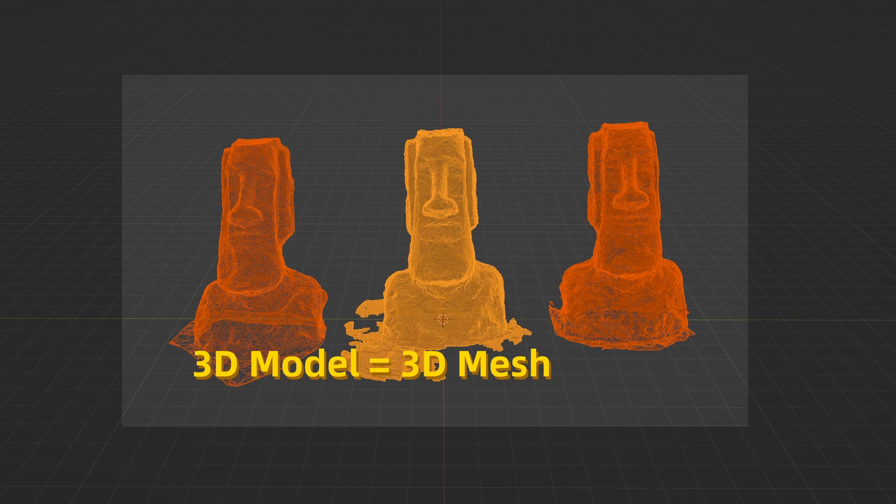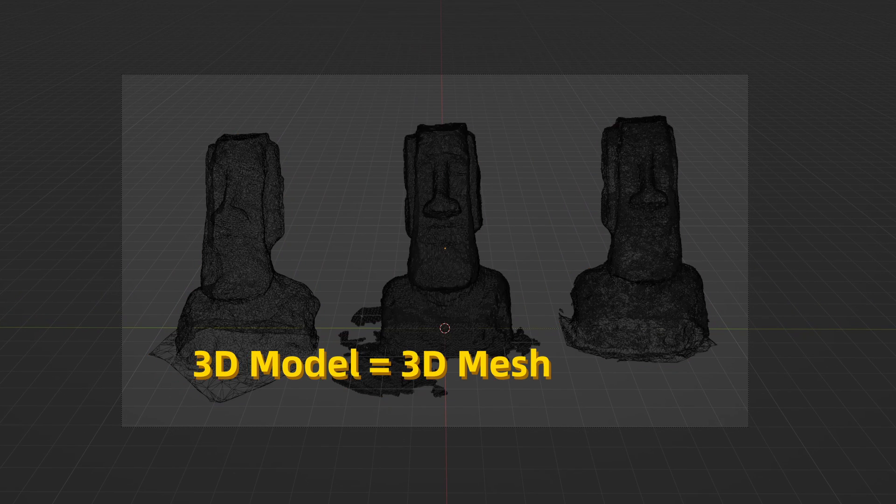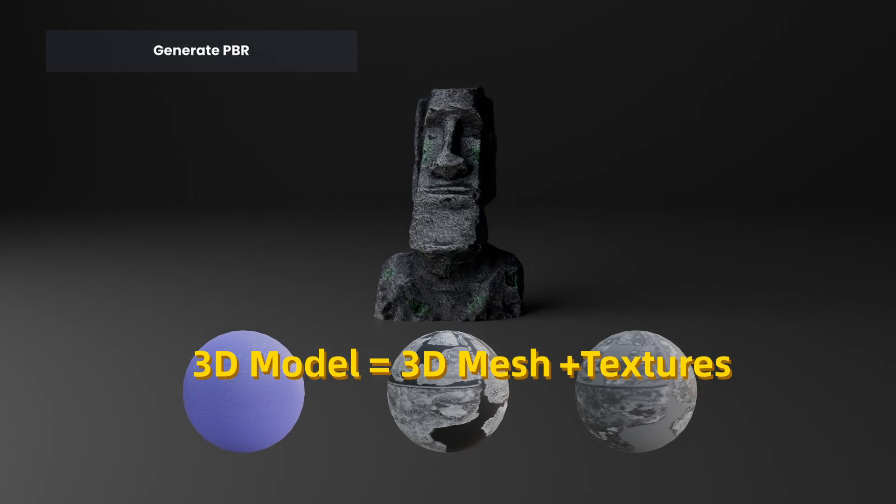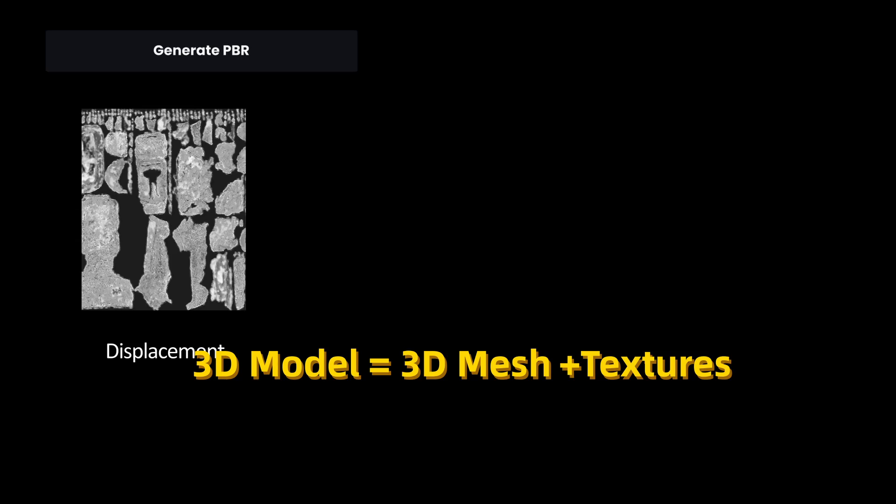3D Gaussian Splatting, or 3DGS for short, is a new way of representing 3D models. When we say 3D models, we generally mean the combination of two things: a 3D mesh that represents the shape of an object, and textures that represent the color and materials of it.